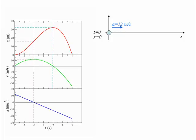The particle starts from the origin at x equals zero with zero velocity but a positive acceleration. Under this acceleration, the particle gains a positive velocity and moves in the positive direction. From time t equals zero to t equals two seconds, x, v and a are all positive.